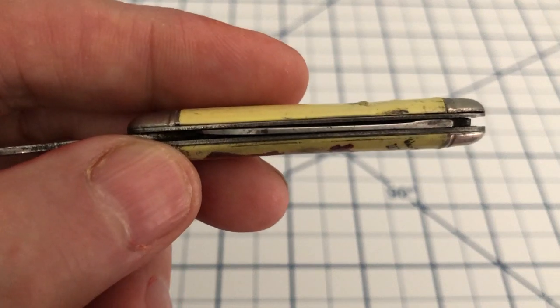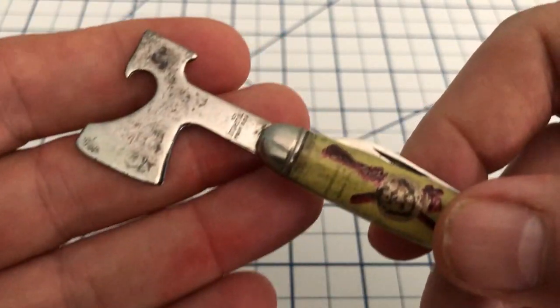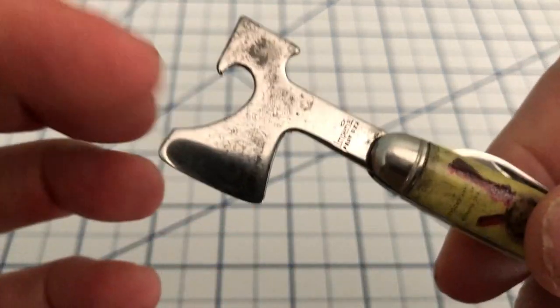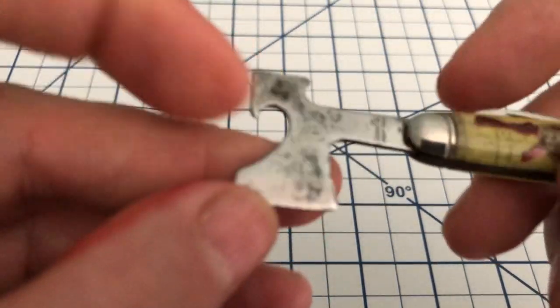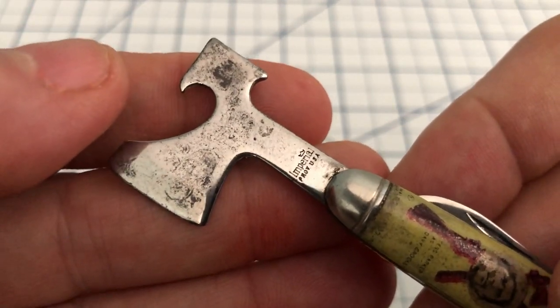The blade is reasonably centered on here. Before we pull that out, let's take a look at the hatchet part of this. So you can see this is also a cap lifter designed as a hatchet. It is, my understanding, carbon steel.